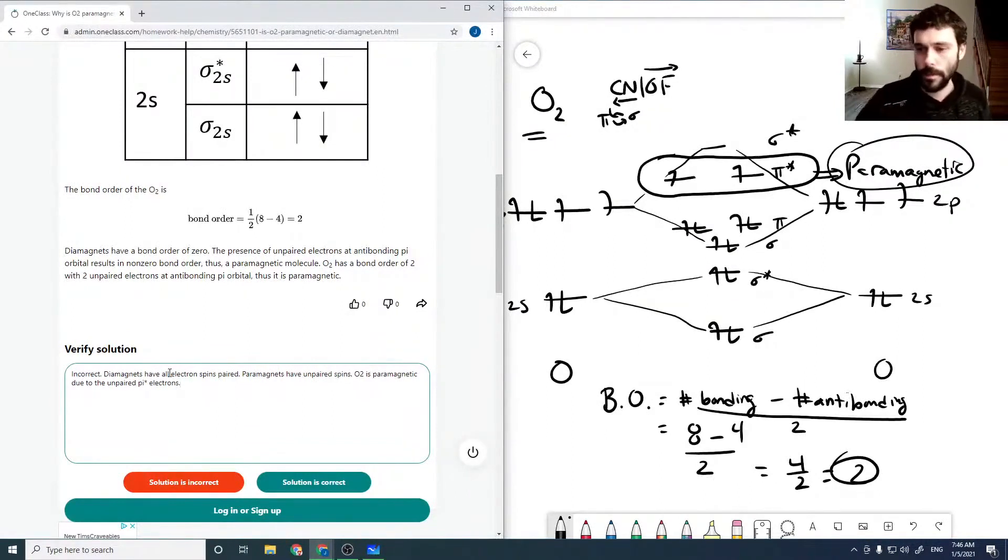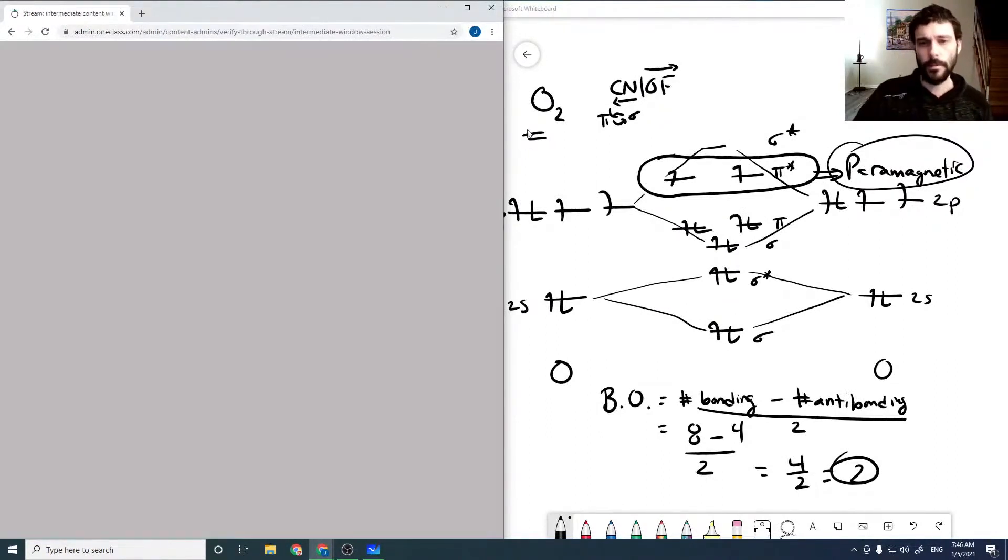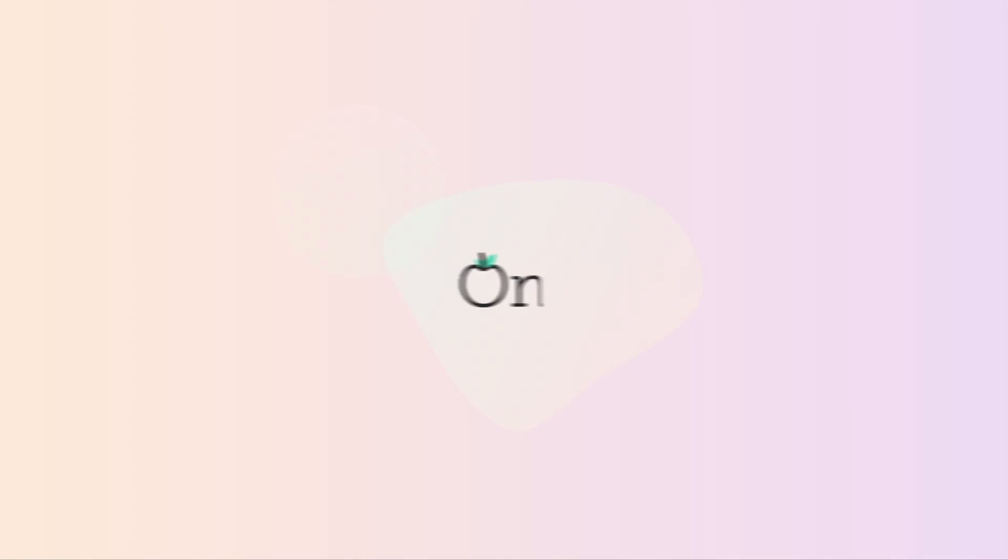So it is correct that it's due to the unpaired electrons, but that isn't what results in the non-zero bond order. Okay, so I'm just going to say it's meaningless.